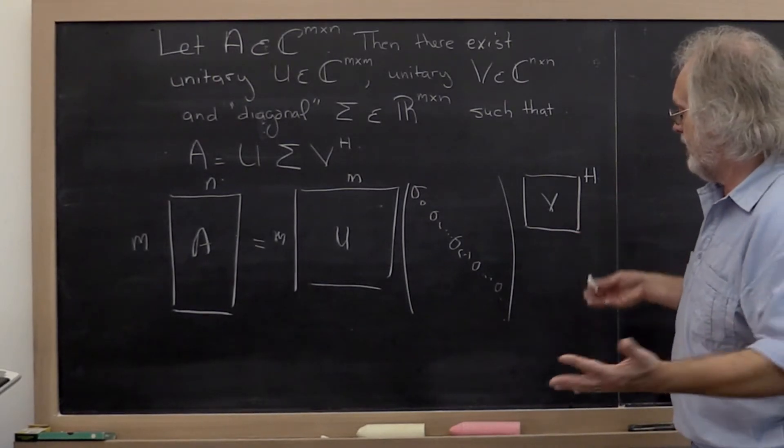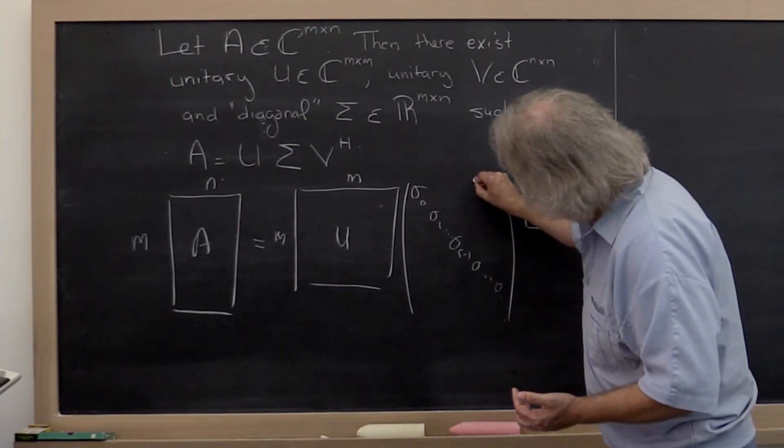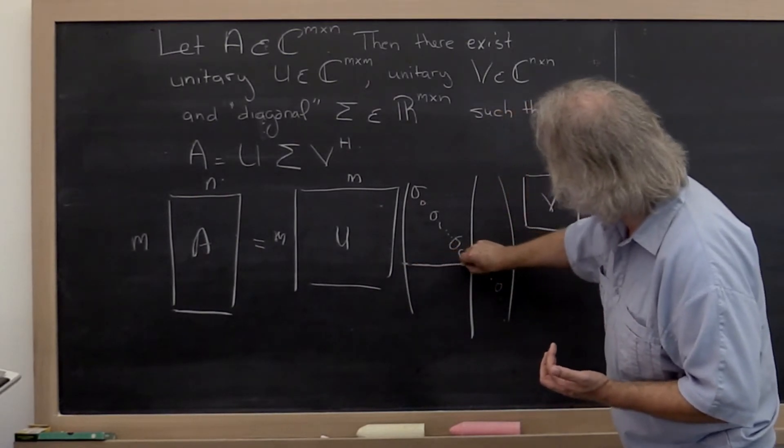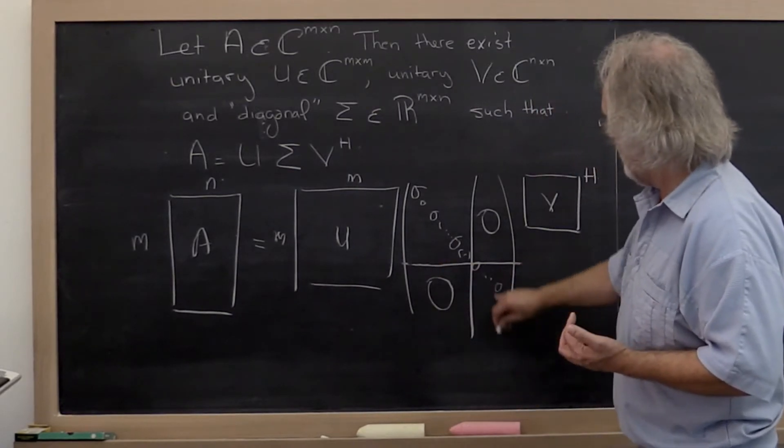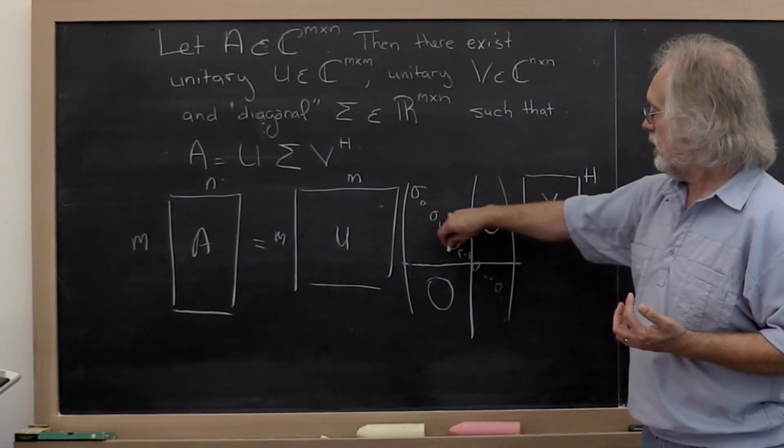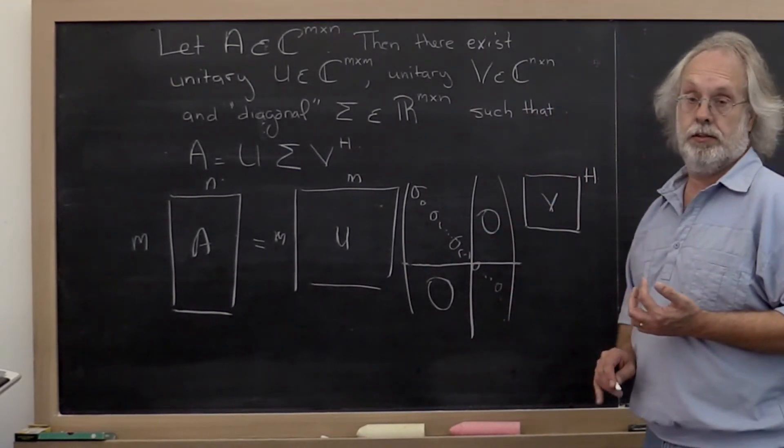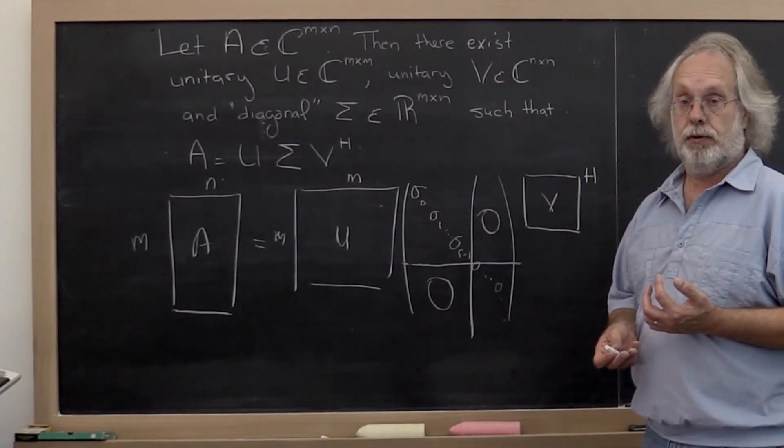Now another way of thinking about this is that at some point you can block this and say there's a block of zeros here, there's a block of zeros here, there's a block of zeros here, and there's a diagonal matrix sitting right here.